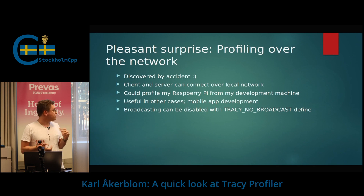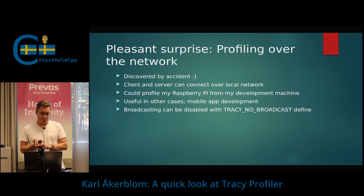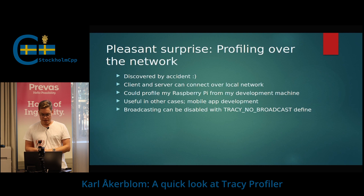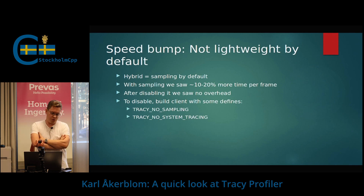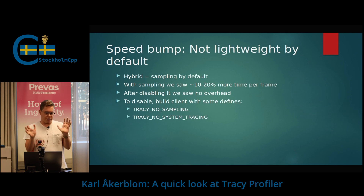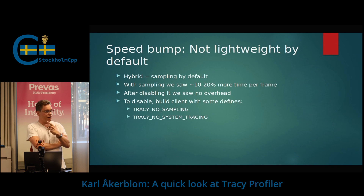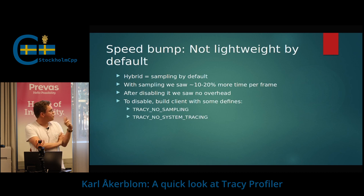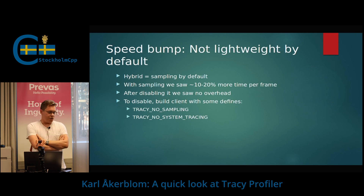You could use this for other things too — for example, if you have a mobile game you want to profile, you can sit comfortably on your dev machine. If you don't want the broadcasting feature, it's possible to turn it off with a defined macro called TRACY_NO_BROADCAST. First speed bump: the hybrid sampling had a pretty big impact on frame times for my use case. After disabling the sampling, there was basically no overhead at all — really lightweight if you just don't have automatic sampling enabled. You disable it by including some defines when you build the client.